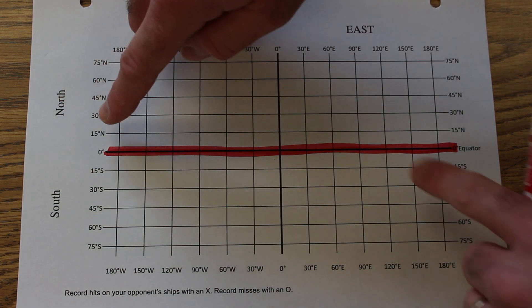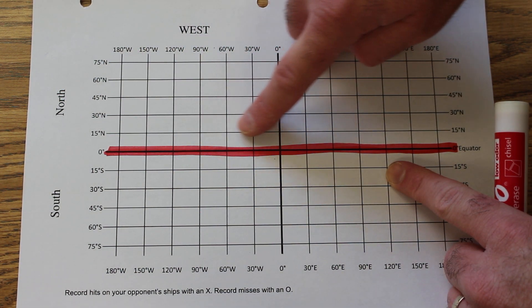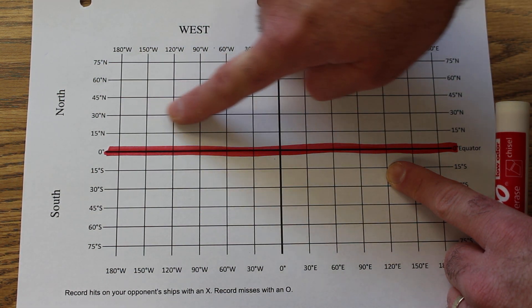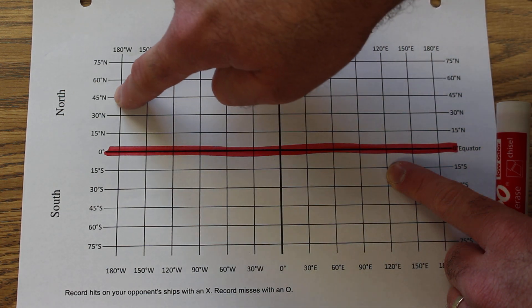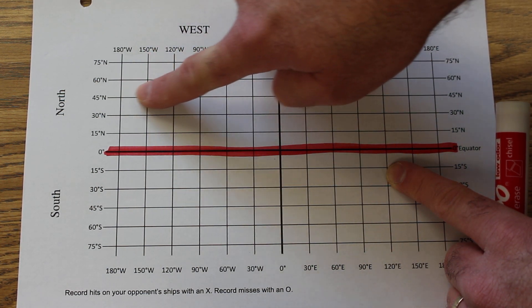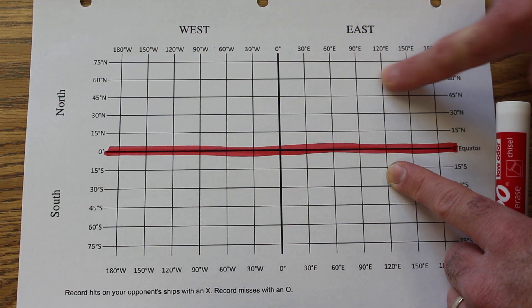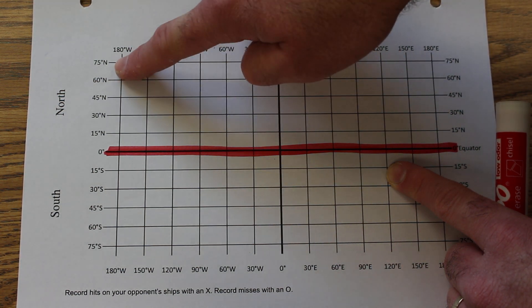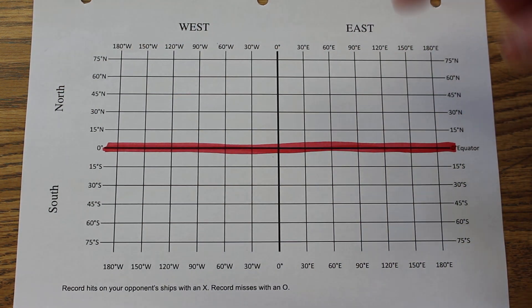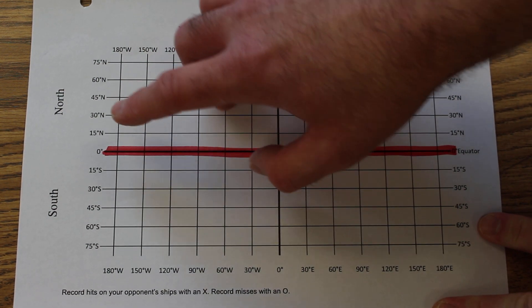Any latitude lines that run parallel to the equator are labeled north if they're above the equator. This is 60 degrees north, 75 degrees north. And if they're below the equator, they're labeled south.